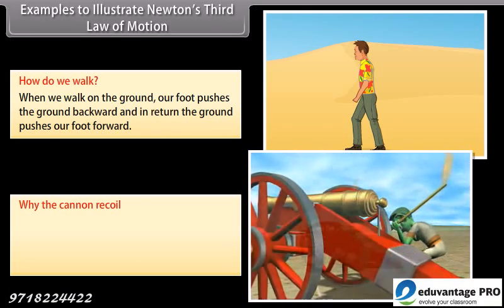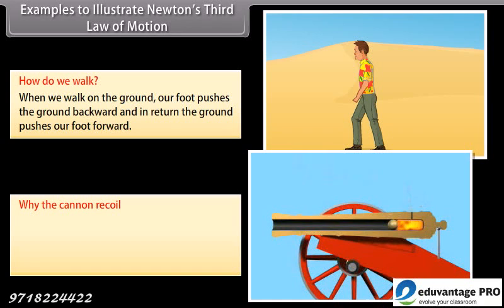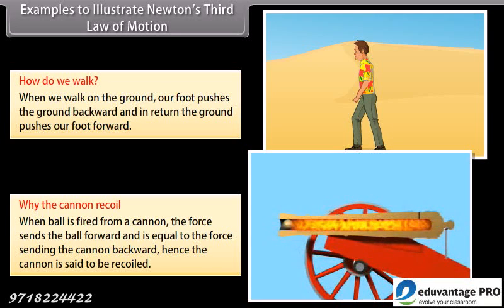Why the cannon recoil? When ball is fired from a cannon, the force sends the ball forward and is equal to the force sending the cannon backward. Hence the cannon is said to be recoiled.